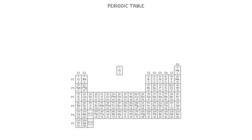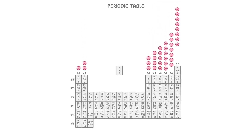One of the interesting things about the periodic table is that the group number tells us how many electrons the atoms of that group have in the outermost shell. So group 1 elements have 1 electron in the outermost shell, group 2 elements have 2, and so on.